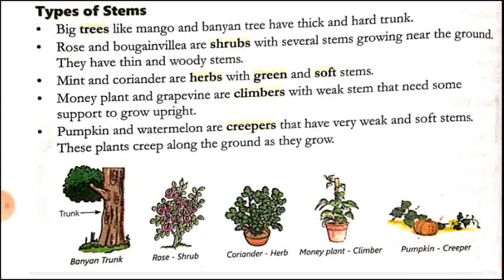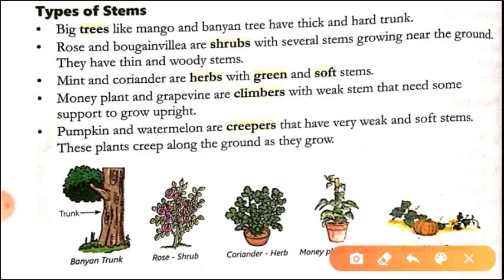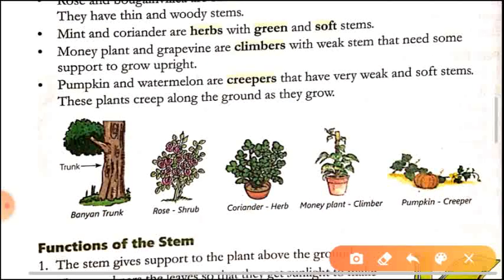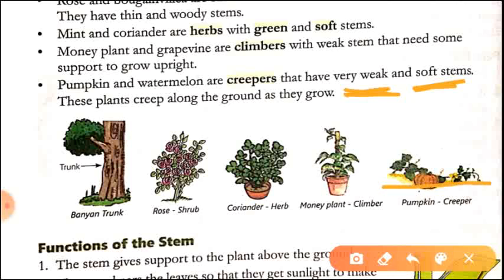Next, pumpkin and watermelon are creepers that have very weak and soft stems. These plants creep along the ground as they grow. Creepers are plants whose stems are very weak and soft and cannot grow upright, so they creep along the ground level.